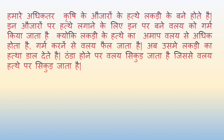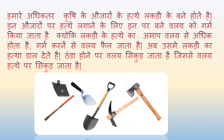हमारे अधिकतर कृषि के औजारों के हत्थे लकड़ी के बने होते हैं। इन औजारों पर हत्थे लगाने के लिए इन पर बने छल्ले को गर्म किया जाता है क्योंकि लकड़ी के हत्थे का आमाप छल्ले से अधिक होता है। गर्म करने से छल्ला फैल जाता है, अब उसमें लकड़ी का हत्था डाल देते हैं और ठंडा होने पर छल्ला सिकुड़ जाता है जिससे वो हत्थे पर कस जाता है।